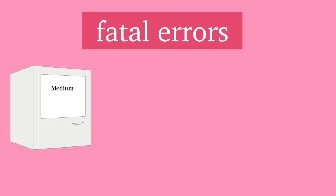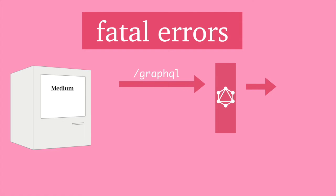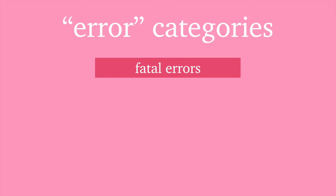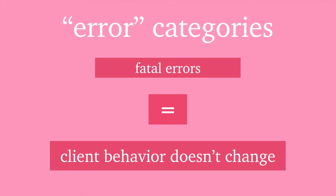So let's walk through what it would look like if we had a fatal error. We have our awesome medium.com. Our client will make a request hitting the GraphQL endpoint to our GraphQL server, and that will probably hit some service. But maybe that service is like on fire, so things are going wrong, and the service sends back a 500. Then the GraphQL server sends back something like 500 internal server error. So we probably display something like a 500 — that's pretty much all you get. I would say that fatal errors don't really cause the client to change behavior. If you have a fatal error, the client doesn't really need to do anything super differently — they just need to handle the thing.